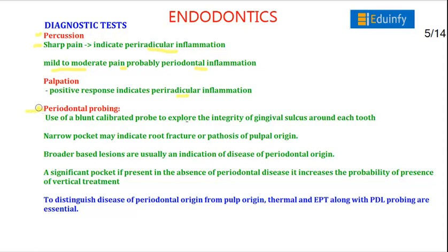In periodontal probing, a blunt calibrated probe is used to explore the integrity of the gingival sulcus around each tooth. A narrow pocket indicates root fracture or pathosis of pulpal origin, while a broad lesion indicates disease of periodontal origin. To distinguish periodontal origin from pulpal origin, thermal testing and EPT along with periodontal probing are essential.